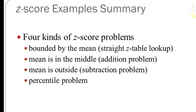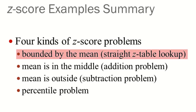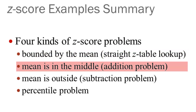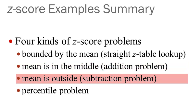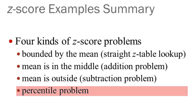Let's start working some of these problems. We're going to do four different kinds. Problem number one is a class of problems I call bounded by the mean — that's a straight Z-table lookup. Problem number two is an example where the mean is in the middle of an area we're interested in — this is an addition problem. Problem number three, the mean is outside the area of interest — that's a subtraction problem. And the fourth kind of problem is solving for a percentile.